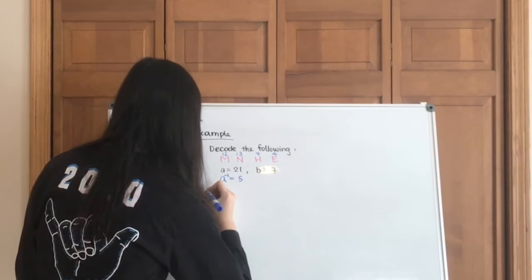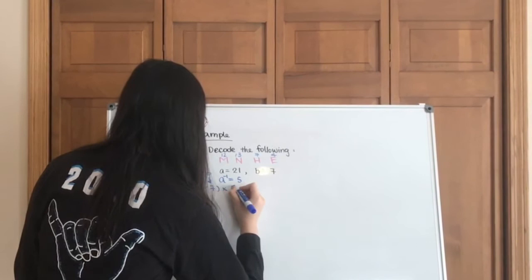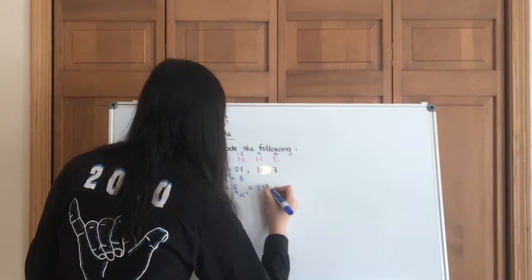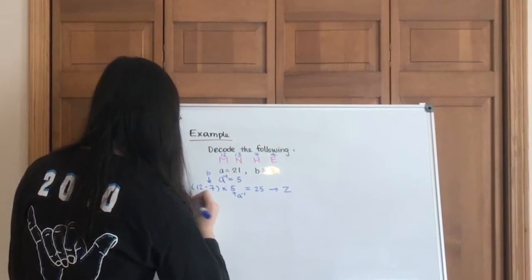So let's start with M. Remember our formula. So we're going to do 12 minus 7, which is the b, multiplied by 5, which is the inverse of a. So that's going to give us 25, which points to Z.